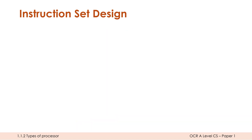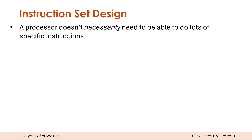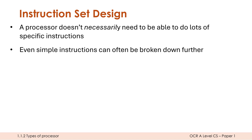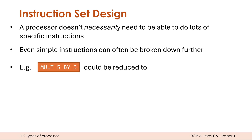If you are creating a brand new CPU you need to decide what the instruction set should contain. This is made difficult because a processor doesn't necessarily need to support lots of different specific instructions, since even quite simple instructions can often be broken down further. For example, multiply seems like an obvious instruction to include in your instruction set.